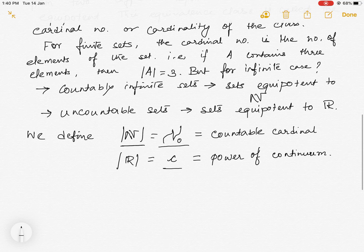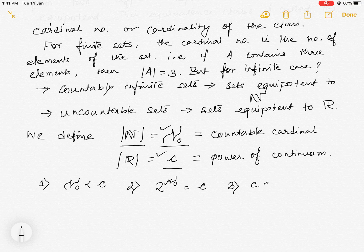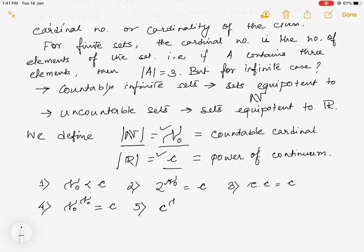Let me write down a few simple properties of these two special cardinals. Number one: aleph-naught is strictly less than c. Number two: 2 to the power aleph-naught equals c. Number three: c times c equals c. Number four: c to the power aleph-naught equals c.